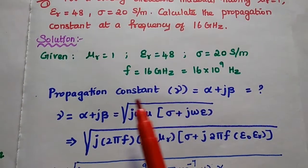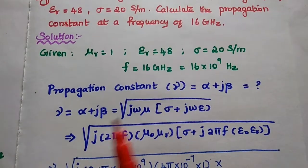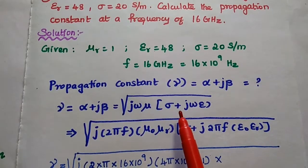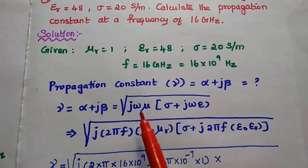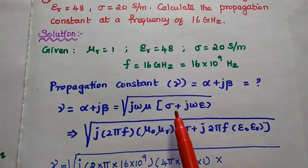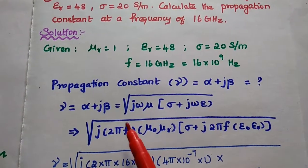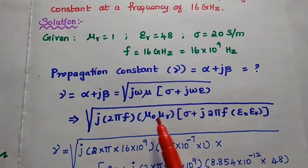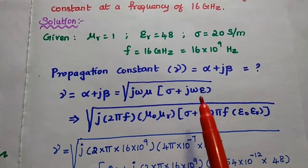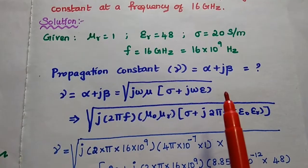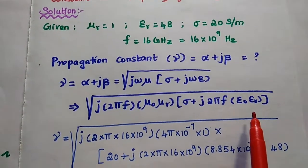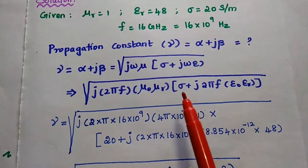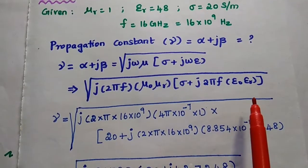Now we are going to find out the propagation constant gamma, that is equal to alpha plus j beta. The formula is the square root of j omega mu into sigma plus j omega epsilon. In this, we can write omega as 2 pi f, mu as mu naught into mu r, sigma as it is, and epsilon as epsilon naught epsilon r.